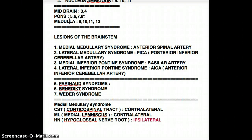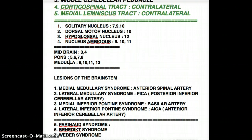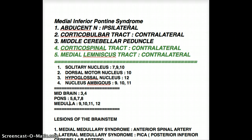In Medial Inferior Pons, which of these four Cranial Nerves is going to be present? The Cranial Nerve that is going to be present in Medial Inferior Pons is Cranial Nerve 6. That's how you differentiate it from other Pontine Syndromes. Now that we understand that, let's look at the other structures that are going to be present in Medial Inferior Pons.